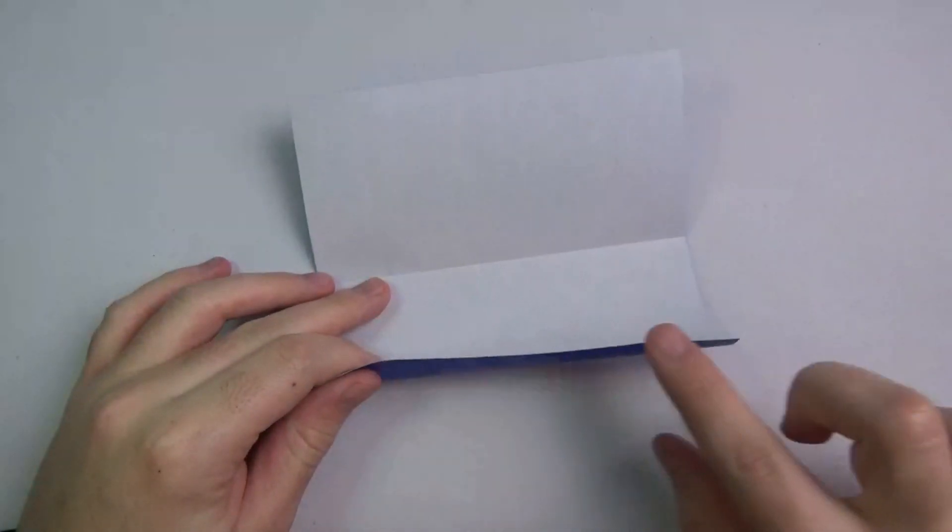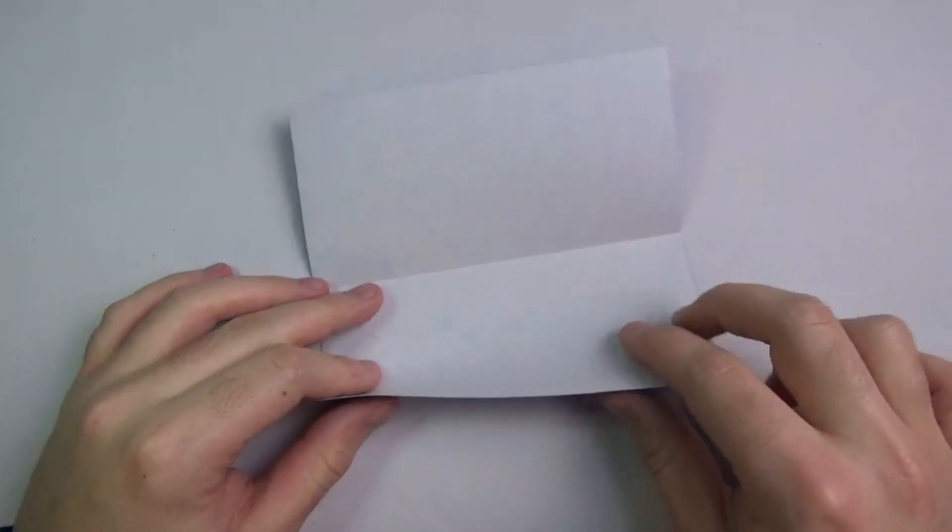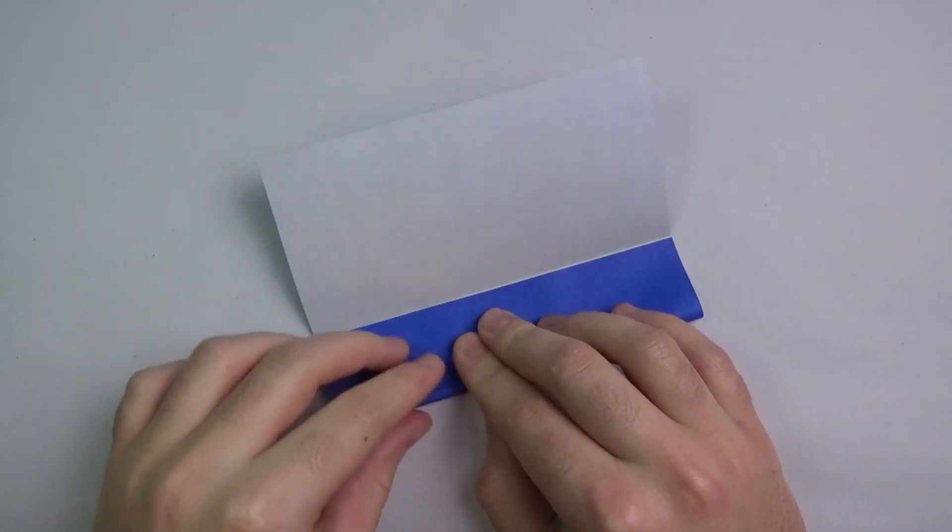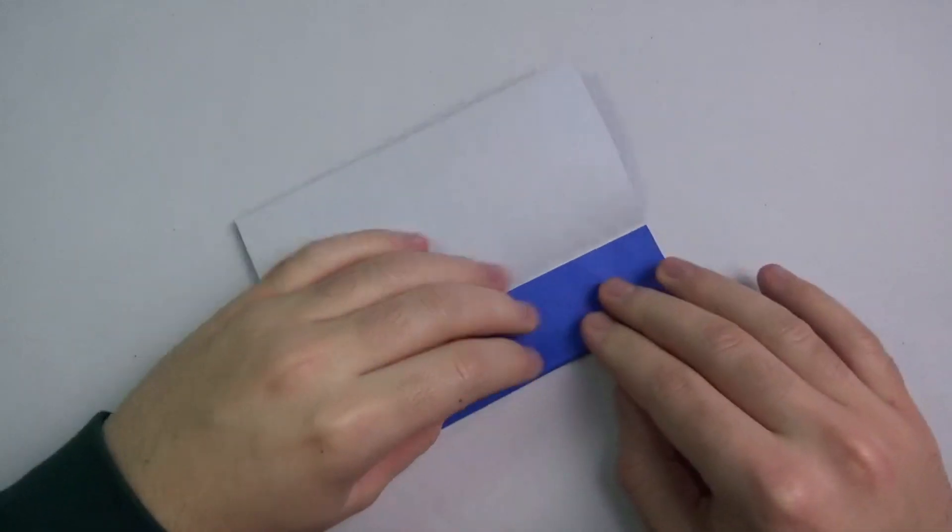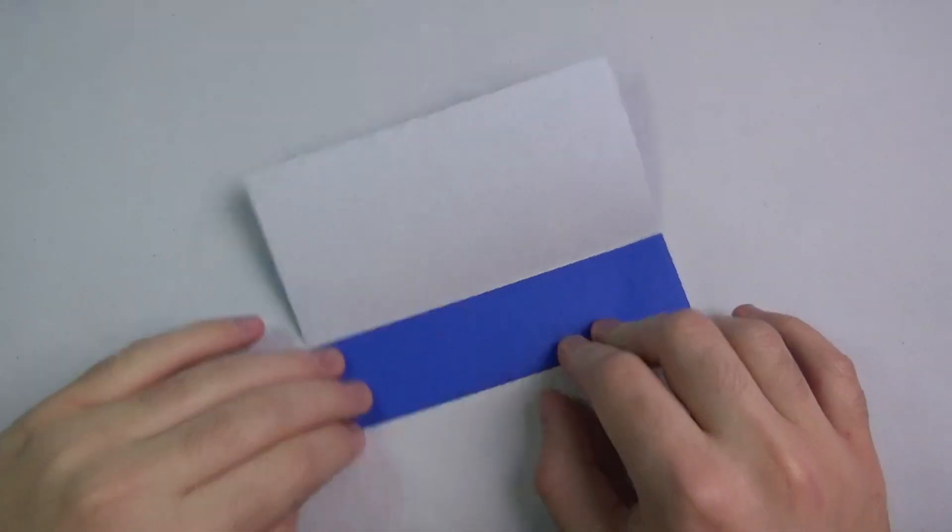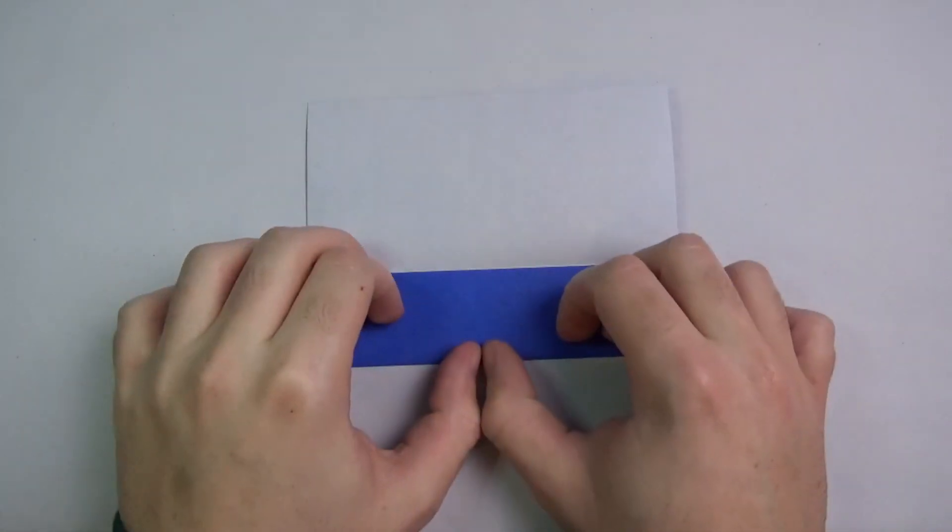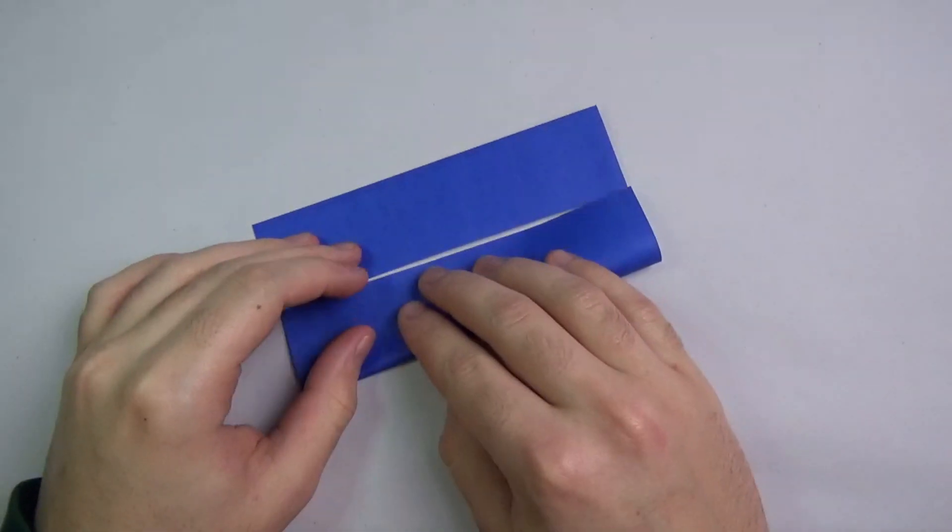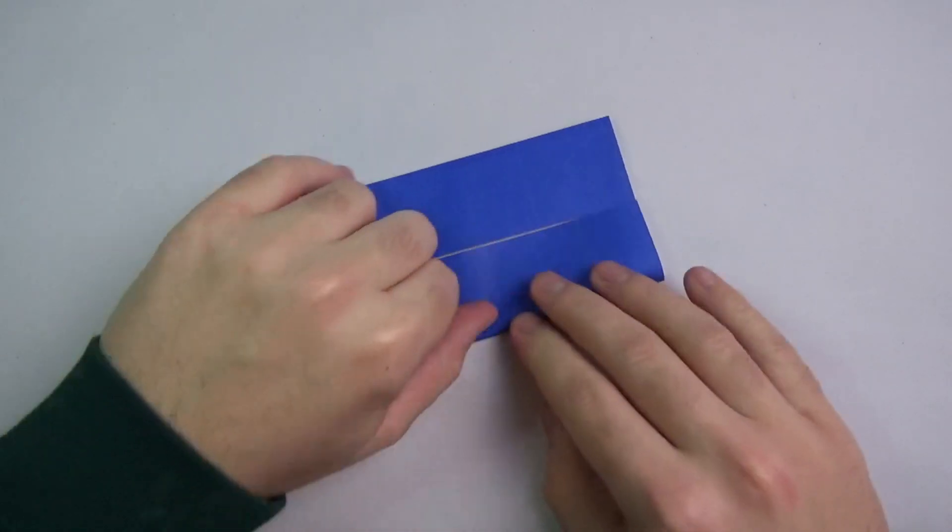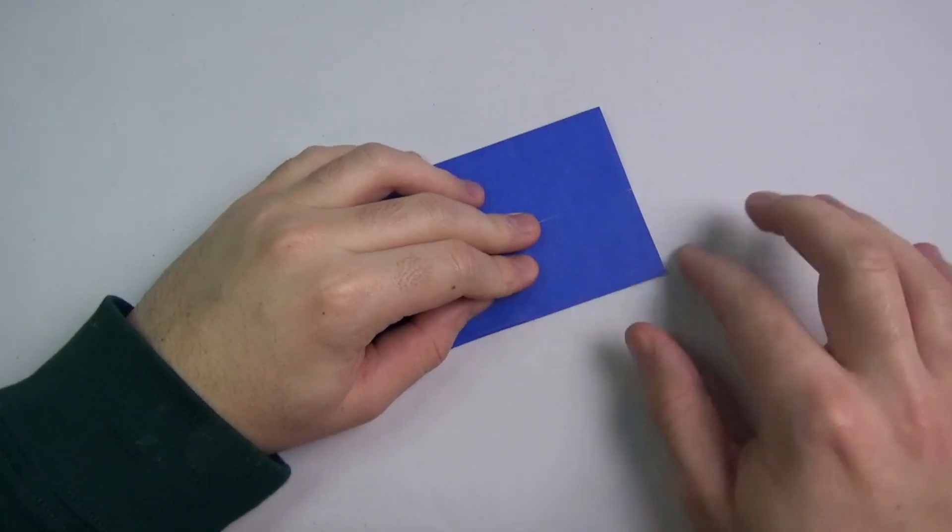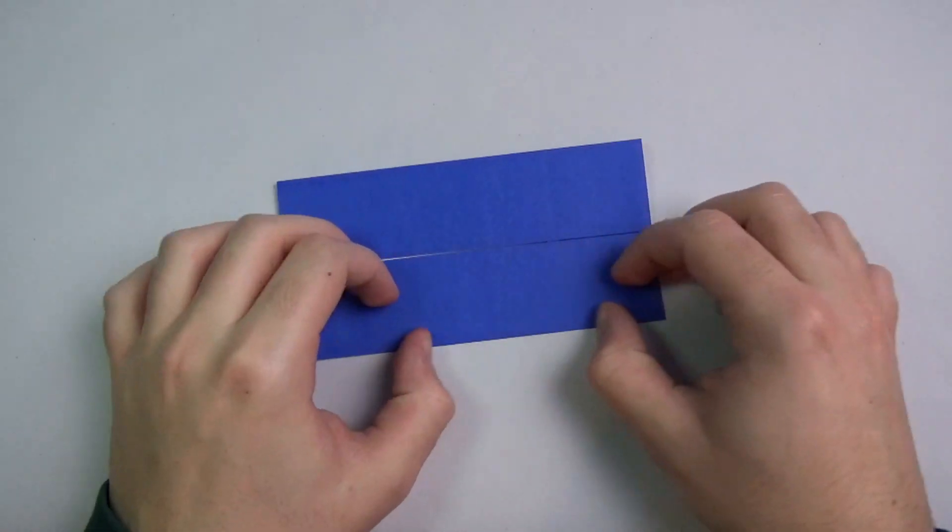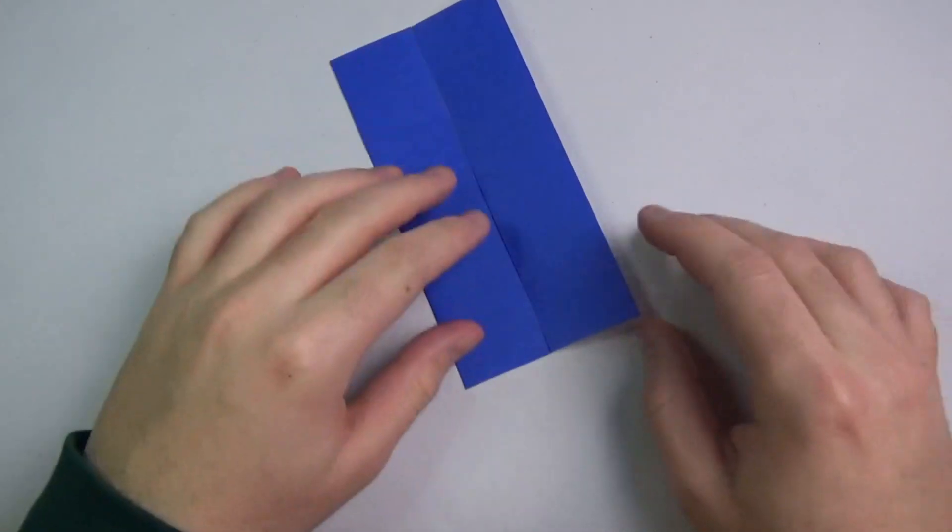And unfold and now fold the two edges to the crease. Okay, now let's make a paper airplane fold.